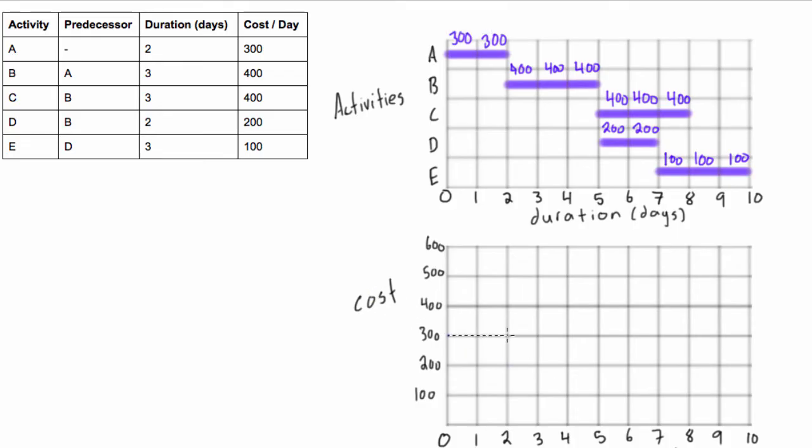So day one and day two, $300. Now let's look at the next day. So day three is $400. Well, day four and day five are also $400, so we're just going to bump up to $400, and then for one, two, three days that will be the cost per day.